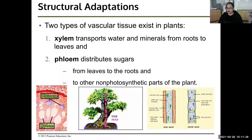The leaves are the only photosynthetic parts of the plant. You also have branches, trunk, and roots — those aren't photosynthetic, but they still need sugars. So that is the job of the phloem.